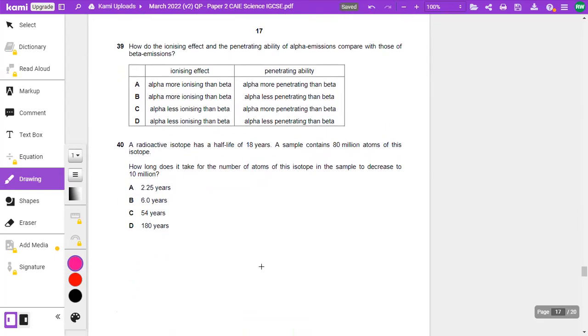Okay, question 39. How does the ionizing effect and the penetrating ability of alpha emissions compare with those of beta emissions? So alpha is more ionizing than beta. So let's say those two are correct. That's incorrect. And alpha is less penetrating than beta. So the only option is B.